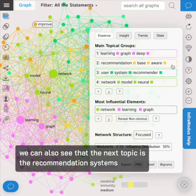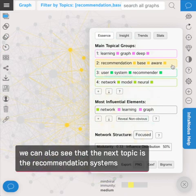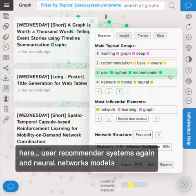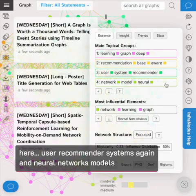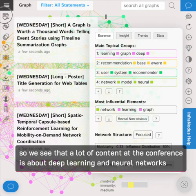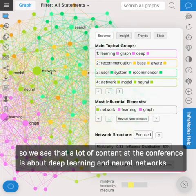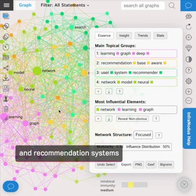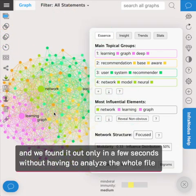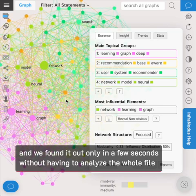We can also see that the next topic is the recommendation systems, user recommender systems, and neural network models. So we see that a lot of the content at the conference is about deep learning and neural networks and recommendation systems, which just happened in a few seconds without having to analyze the whole file.